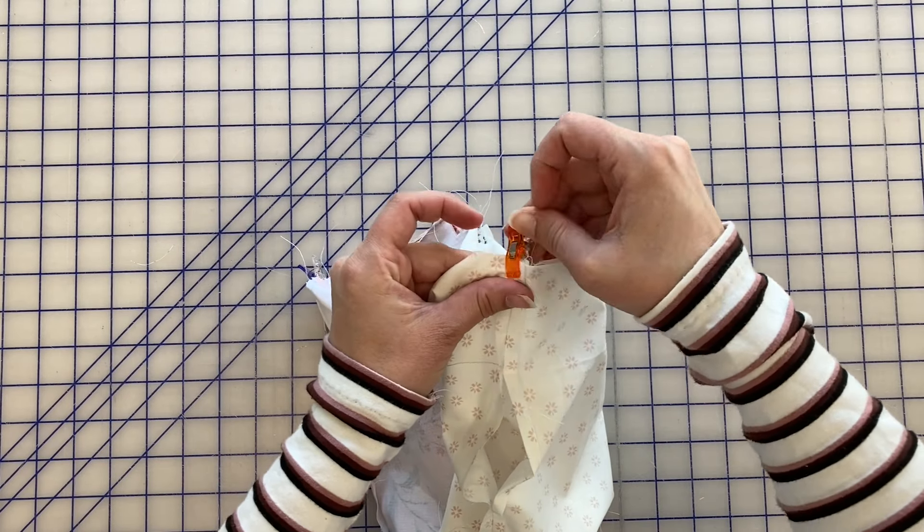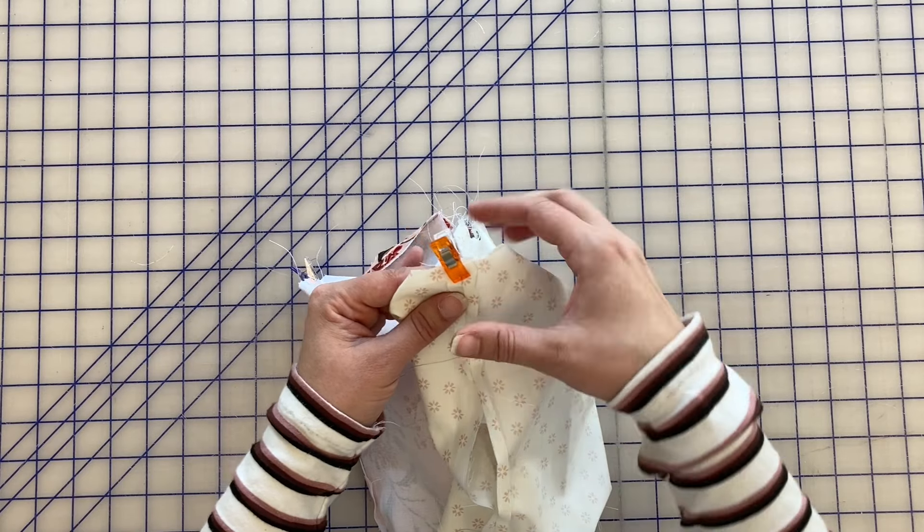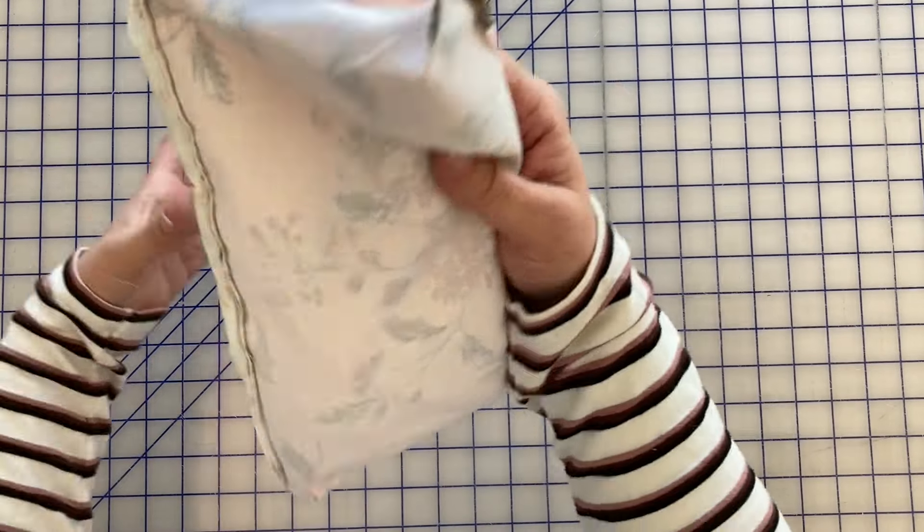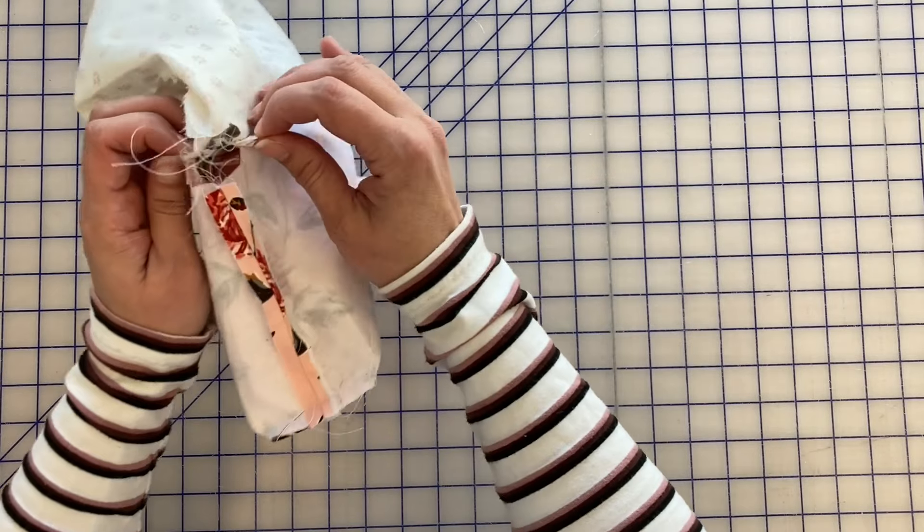And then what I'm going to do is take it to the sewing machine and sew straight across with a 3/8 inch seam allowance on all four. Okay, so I have stitched across my corners but now we need to deal with these open bits.